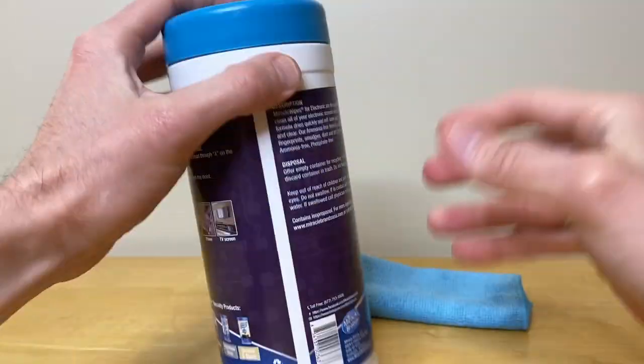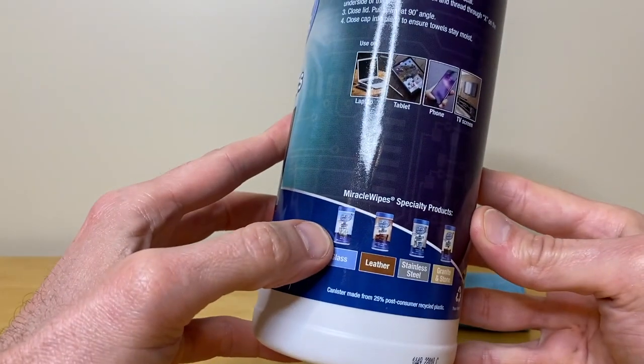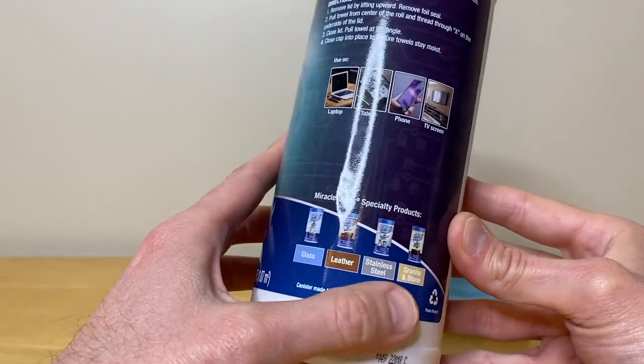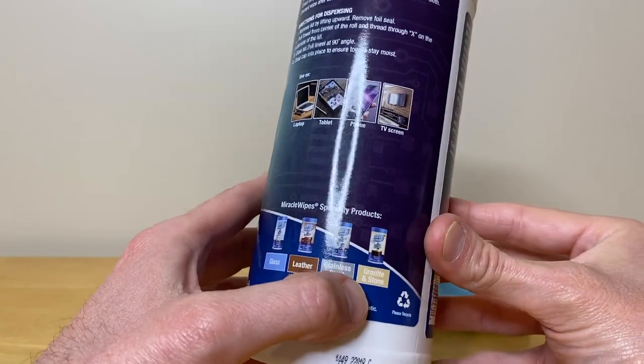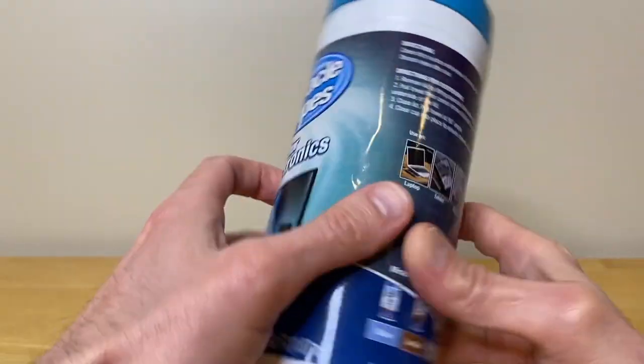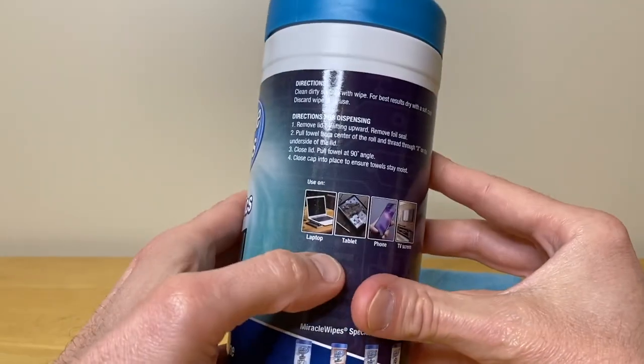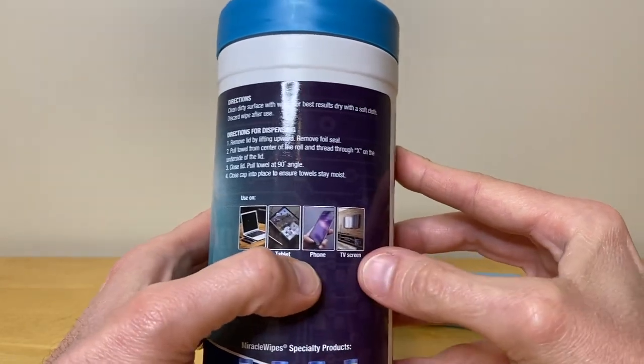I'm going to re-secure the cap, and it looks like Miracle Wipes has an entire family of products here for glass, leather, stainless steel, and granite and stone. Pretty neat. And again, this product specifically for electronics will cover laptop, tablet, phone, and TV screen.